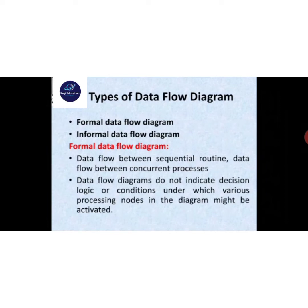There are two types of data flow diagram: the formal data flow diagram and the informal data flow diagram. The formal DFD describes data flow between sequential routines and data flow between concurrent processes. Sequential means one module processes after another, step by step. Concurrent means multi-process, so the formal DFD uses both sequential routine and concurrent process.